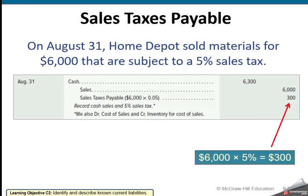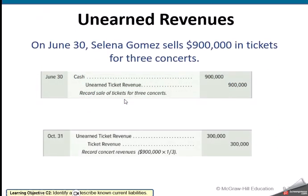Here we have a sales tax payable example. Home Depot sold materials for $6,000 subject to 5% sales tax. $6,000 times 5% gives us $300 in sales tax. The customer pays the full amount, and then we split it: $6,000 is our sales revenue, and $300 we hold in a sales tax payable account — we have that money, but we owe it to the county — and then pay it out when it's due.